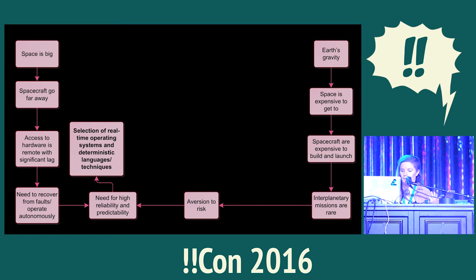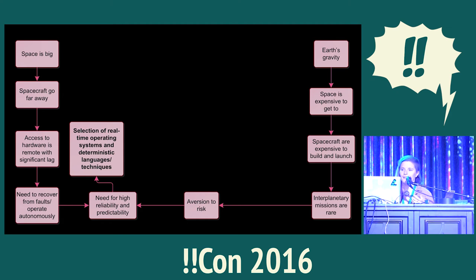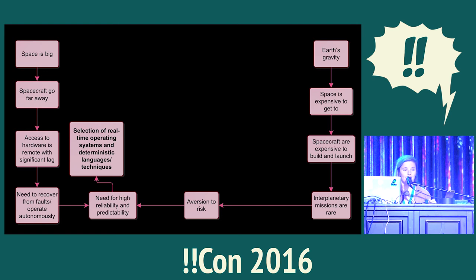Determinism is another important part. One of the main ways we achieve determinism is by avoiding dynamic memory allocation after initialization. Dynamic memory allocation can lead to slow and possibly indeterminate access times, memory leaks, and heap fragmentation. So we do not use dynamic memory in that way. Another tenet of deterministic programming is avoiding recursion. We use loops that must have a statically determinable upper bound on the number of iterations, and we don't use direct or indirect recursion.